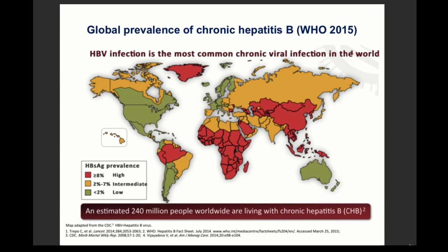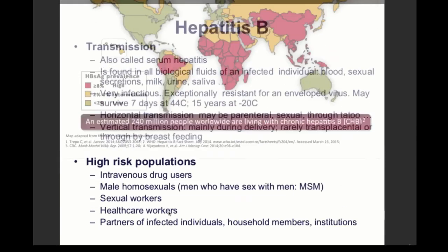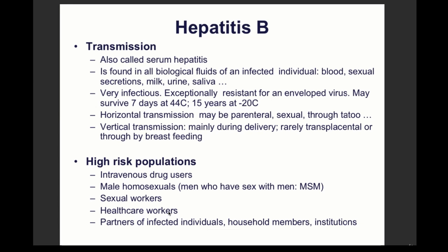Looking at the epidemiology map, hepatitis B is found all over the world, with 240 million people living with chronic hepatitis B. It is transmitted as a serum hepatitis — through exchange of biological fluids. The most important route is blood, followed by sexual contact. The virus is also transmitted through milk (vertical transmission), urine, and saliva.